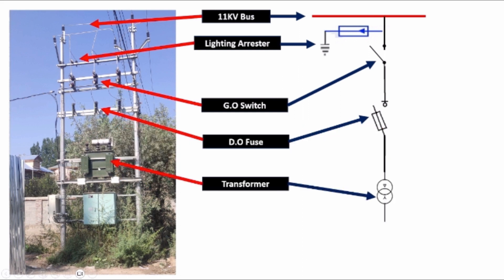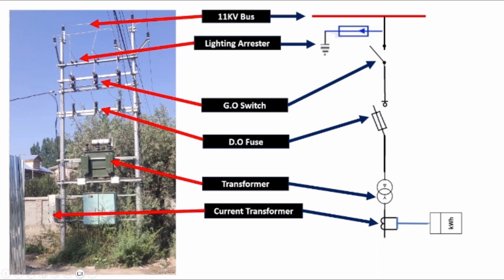From the LT side of the distribution transformer, that is the secondary side, the connections are going to this meter box. The meter box contains CTs and the energy meter. The symbol of this connection is like this — this is the CT symbol and this is the meter. The secondary of the CTs gets connected with the energy meter.